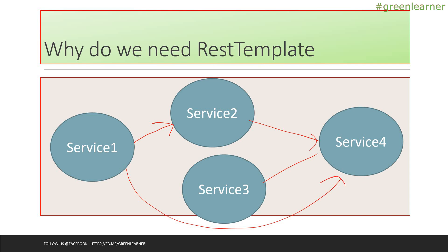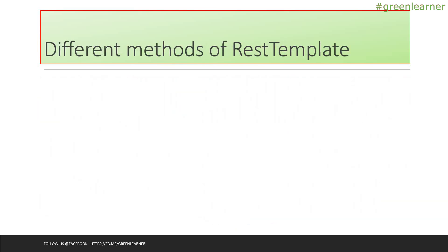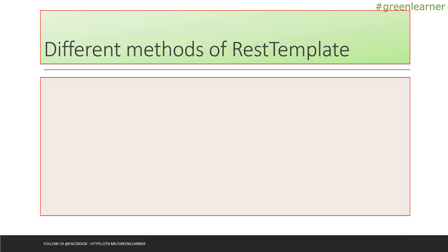Services should be able to communicate with each other to create a single full-fledged application. In this video, we are going to achieve that. REST template is one way that is used to enable communication. So let's go ahead and understand what REST template is. REST template has different methods to communicate with other services. The first set of methods are named 'exchange'. Using exchange, you can pass different HTTP methods like GET, PUT, and POST to interact with the service.